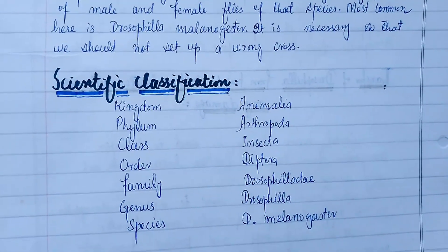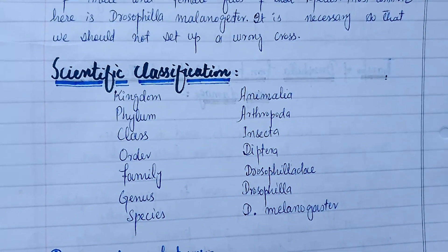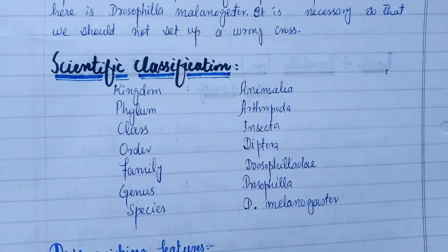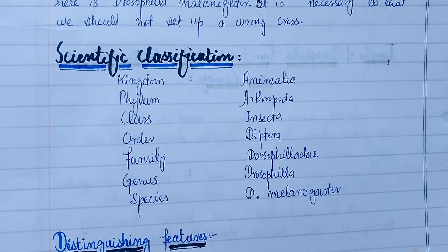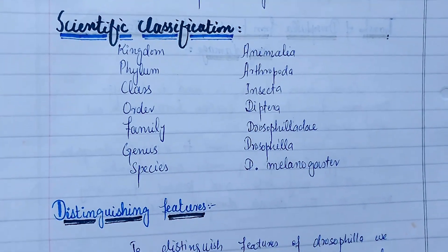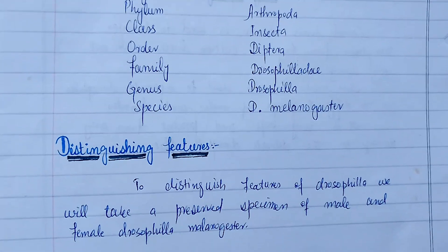First we will write its demonstration and then its scientific classification: kingdom, phylum, class, order, family, genus, and species name. After that we will write its distinguishing features.